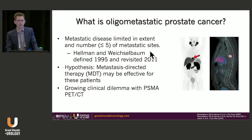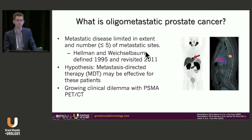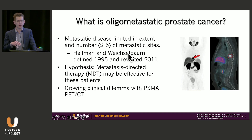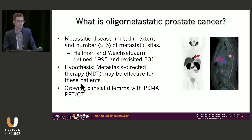What is oligometastatic prostate cancer? The definition is metastatic disease limited in extent and number, with the number being less than or equal to five sites of metastatic disease. It was initially defined in 1995 across all cancers. The underlying hypothesis is that metastasis-directed therapy may be effective for this subset and potentially offer a cure for a small subset. This is becoming a growing clinical dilemma for all urologists, medical oncologists, and radiation oncologists due to PSMA PET CTs.